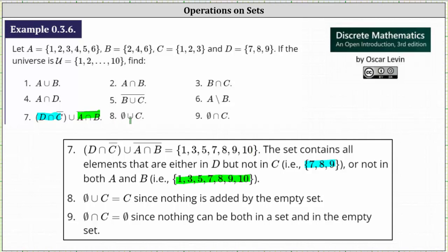Number eight, we have the empty set union C, which are the elements in the empty set or set C or in both. The empty set does not add anything to the union, so the empty set union C is just equal to C, which is the set containing 1, 2, and 3. Number nine, we have the empty set intersect C. Since the empty set doesn't have any elements, the empty set intersect C is equal to the empty set. I hope you found this helpful.